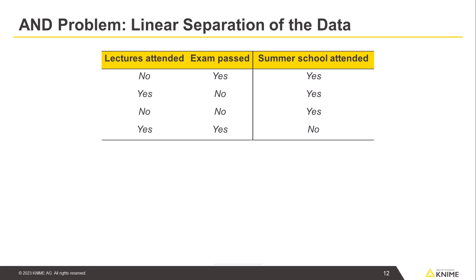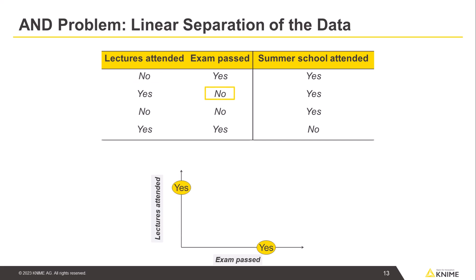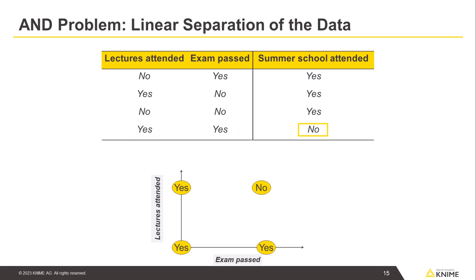Let's first separate this data into two classes linearly with a straight line. In this case, students took part in the summer school if they didn't attend the lectures or failed the exam, or both. Only if they attended the lectures and passed the exam did they not go to the summer school. We can separate these classes via a straight line because all data representing the class 'no' appears in this corner. This means we could solve this kind of problem with a single perceptron.